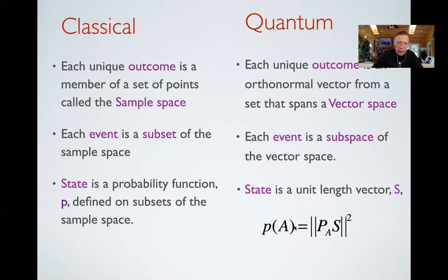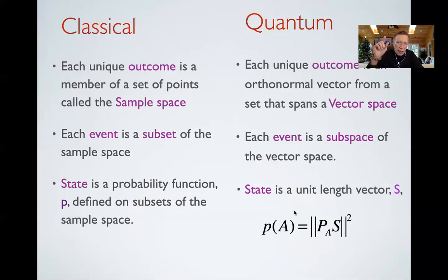You might think this is a strange kind of calculation, but if you've ever done linear regression in social sciences, this is exactly what we do when computing R-squared. If we have a hundred subjects in a study, we have a hundred-by-one vector space. Two predictors x1 and x2 span a plane — a subspace sitting in that hundred-dimensional space. The regression model makes a prediction by projecting the scores onto the plane, and R-squared is proportional to the squared length of that projection. So quantum theory is like using R-squared to compute probability.